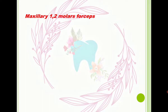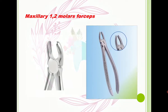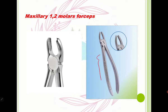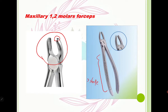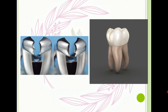Now let's look at maxillary first and second molar forceps. The handle is the same S-shape as the premolar forceps, but pay attention to the working part — there is a beak. To understand the function of this beak, we need to check the root morphology of maxillary molars. There are two buccal roots and one palatal root, so this beak locates and places itself between the two buccal roots.